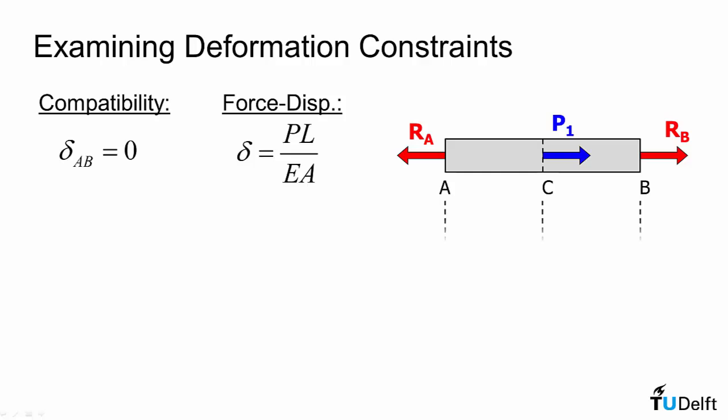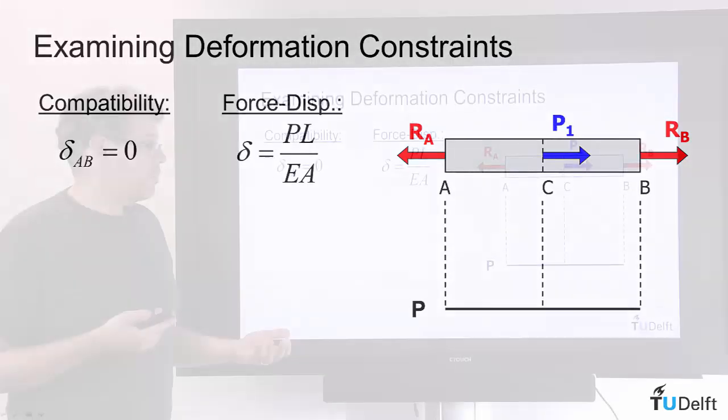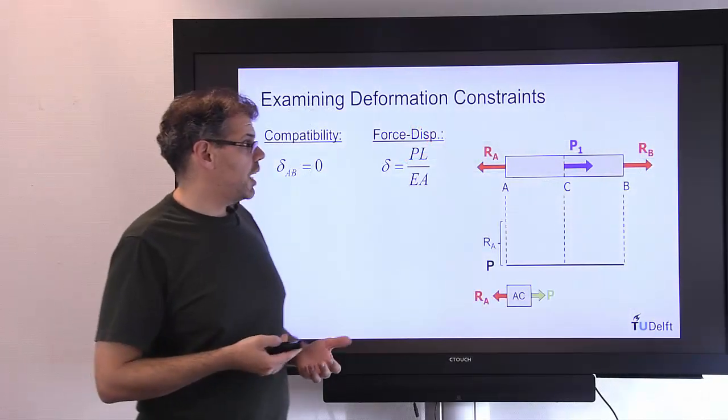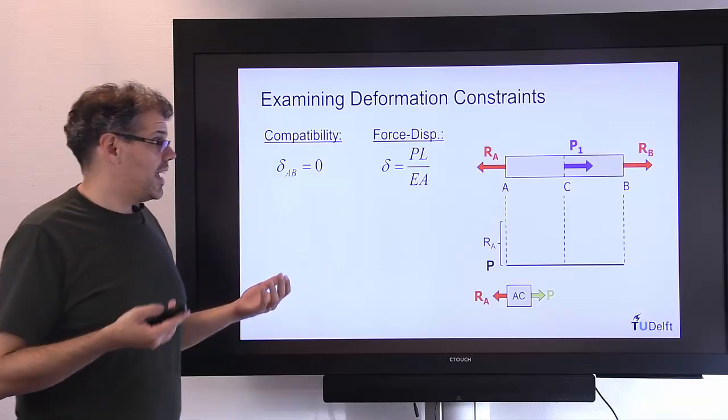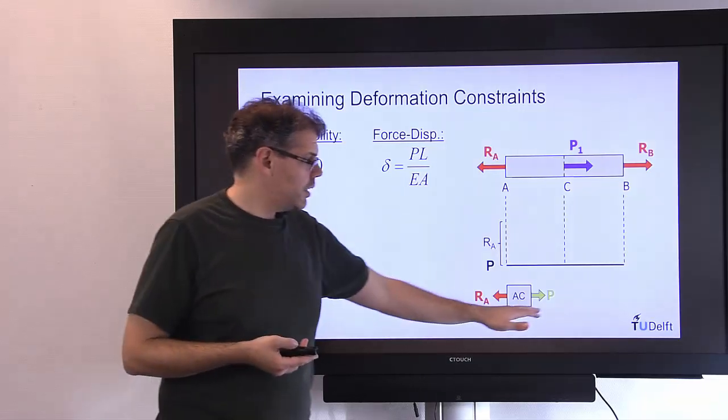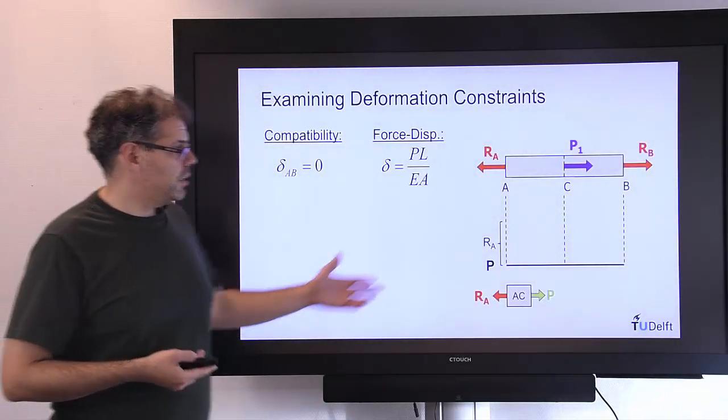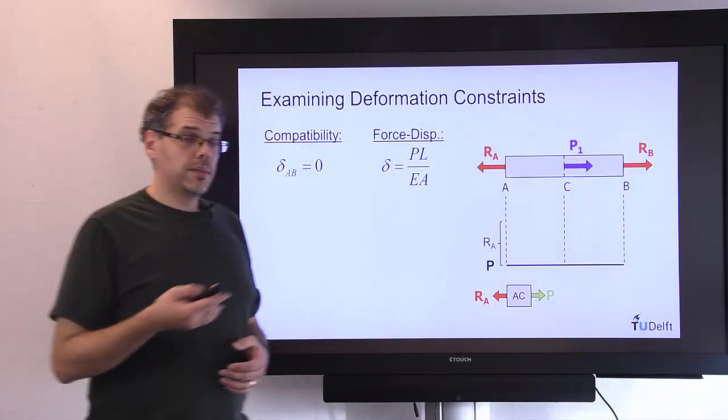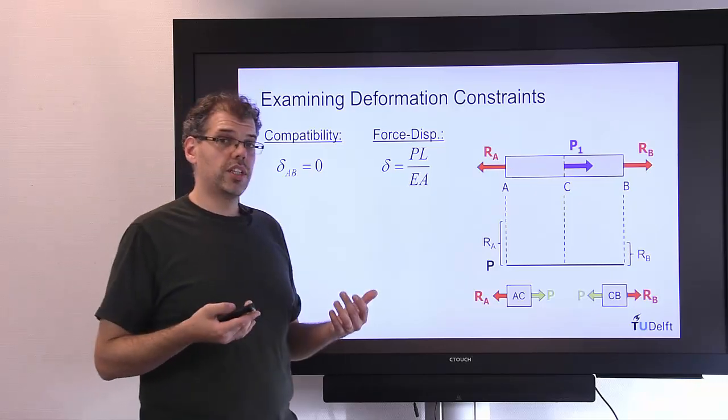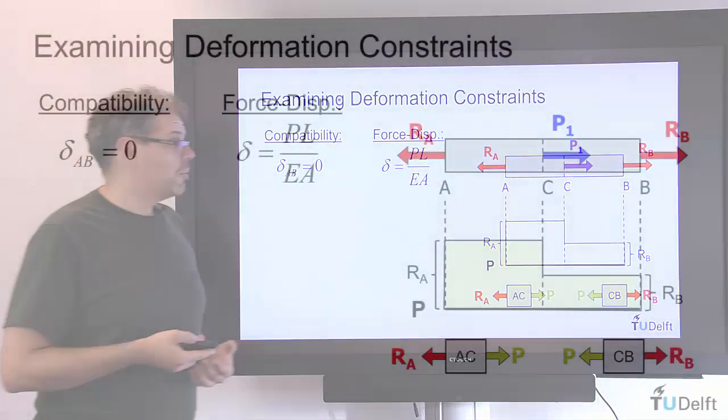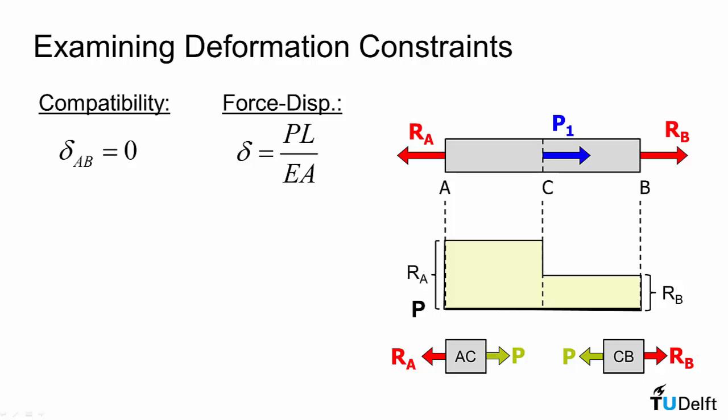If we look at what is occurring along the length of that rod and we do a free body diagram between A and C we can see from our free body diagram that our internal force has to be equal to RA. Similarly for CB our internal force has to be equal to RB and we get an axial load diagram looking like this varying from RA along length AC down to RB along length CB.